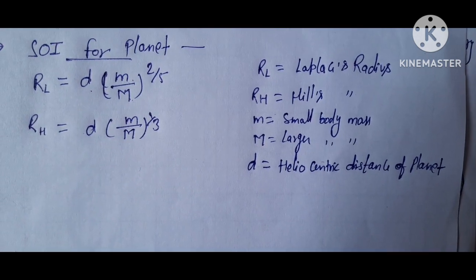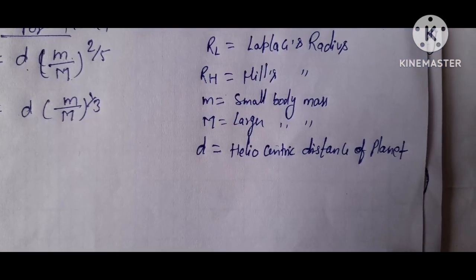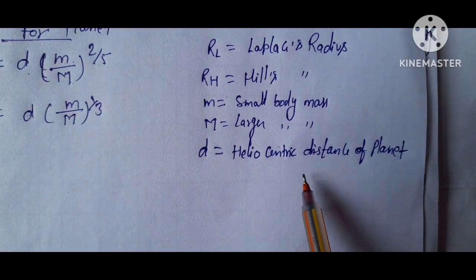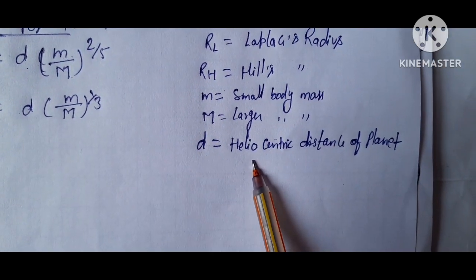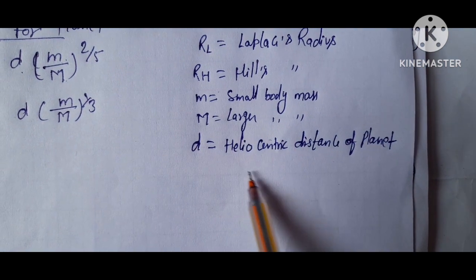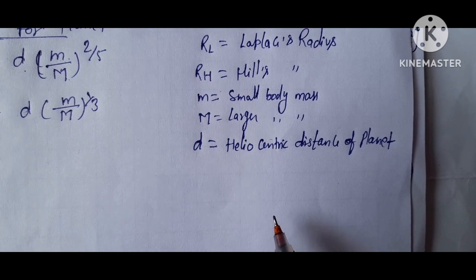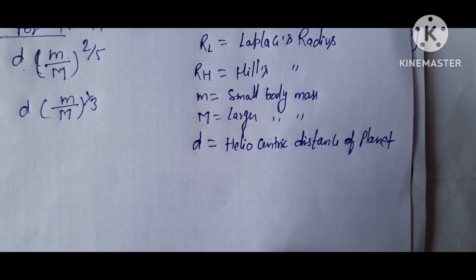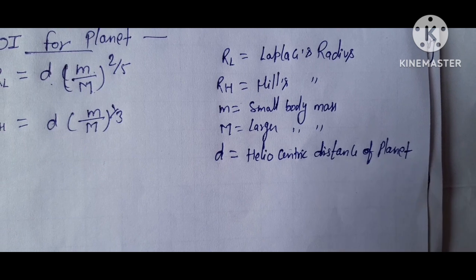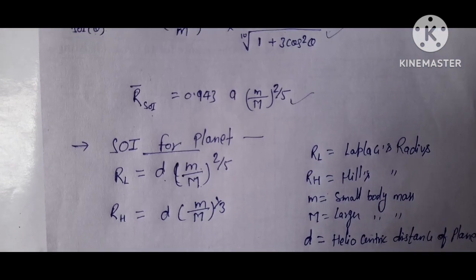So, what is heliocentric distance friends? Friends, helio means this is a Greek word, this means Sun, means Sun in center. So what is heliocentric distance? Friends, the distance between an object and the Sun center, this is a heliocentric distance.